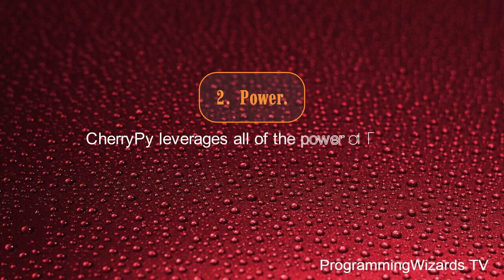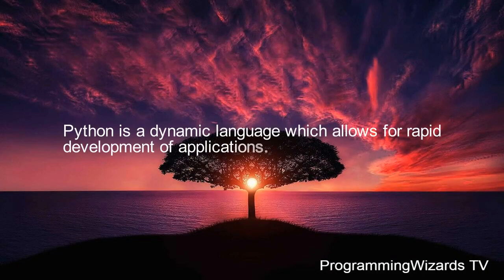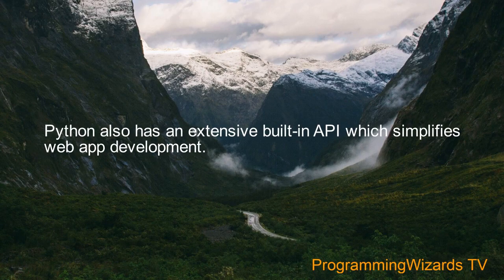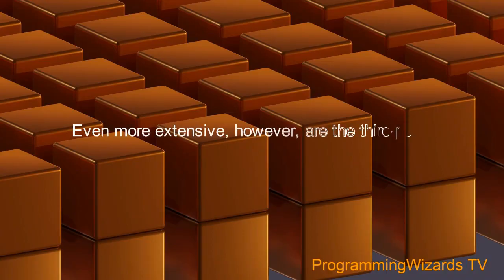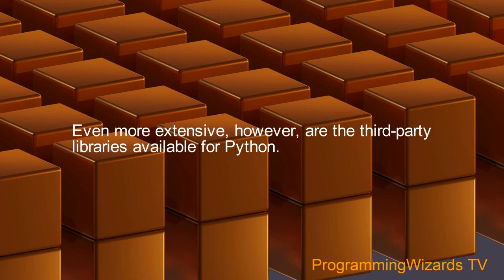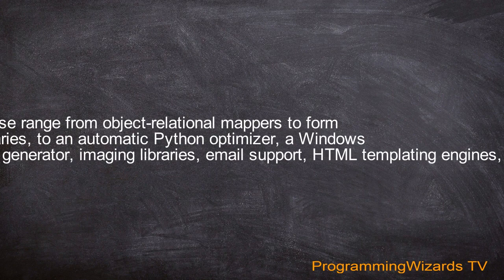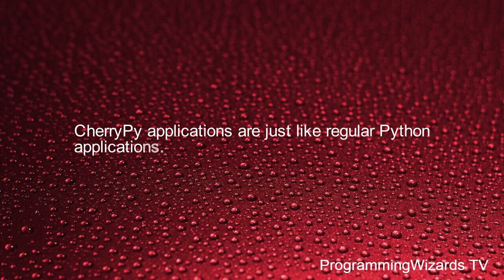Number 2: Power. CherryPy leverages all of the power of Python. Python is a dynamic language which allows for rapid development of applications. Python also has an extensive built-in API which simplifies web app development. Even more extensive are the third-party libraries available for Python. These range from object-relational mappers to form libraries, to an automatic Python optimizer, a Windows EXE generator, imaging libraries, email support, HTML templating engines, etc.